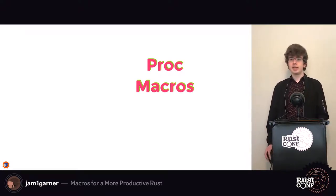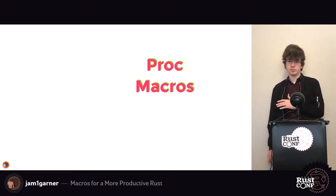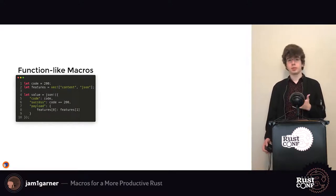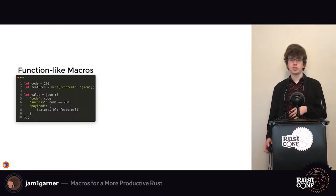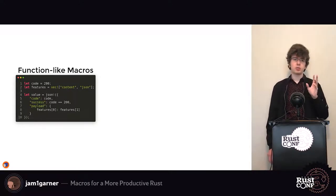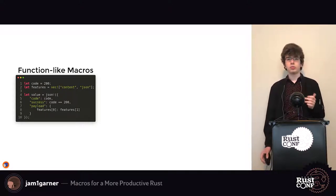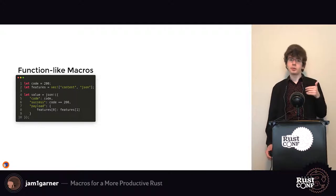Proc macros are the other type of macro, different from macro_rules. The general idea is that you're writing another Rust program which takes in a series of tokens and returns a series of tokens. Function-like proc macros are basically the same as macro_rules macros but more powerful — you can have arbitrary Rust logic for modifying your token stream. For example, there's a json! macro for Rocket that lets you write JSON directly in your code and even use Rust expressions as values or keys.